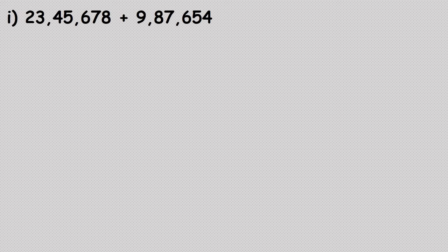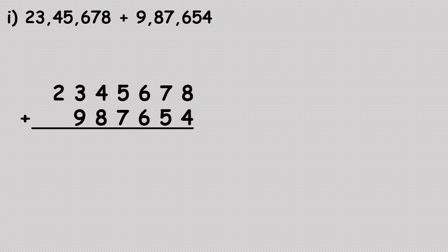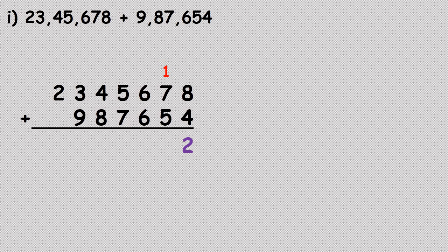Let us now see a few more examples of addition. Let us add twenty-three lakh forty-five thousand six hundred and seventy-eight with nine lakh eighty-seven thousand six hundred and fifty-four. First we will arrange the numbers as per their place value, then add from the units place. The numbers at the units place are eight and four, so eight plus four is twelve — one will be carried and we write two in the units place.